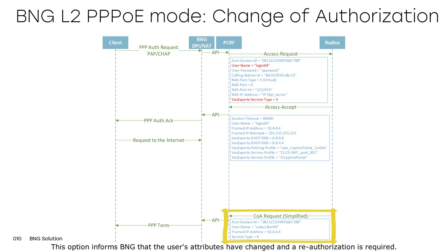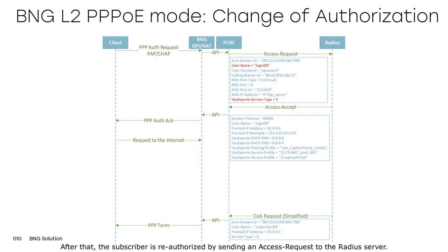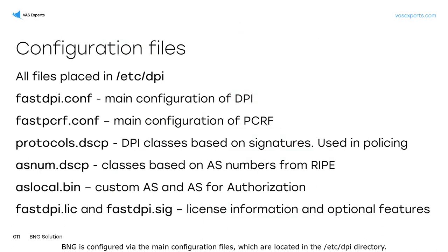To simplify integration, we suggest using simplified COA. This option informs BNG that the user's attributes have changed and a reauthorization is required. Having received such a notification, BNG initiates closing the PPPoE connection with the subscriber. After that, the subscriber is reauthorized by sending an access request to the RADIUS server.